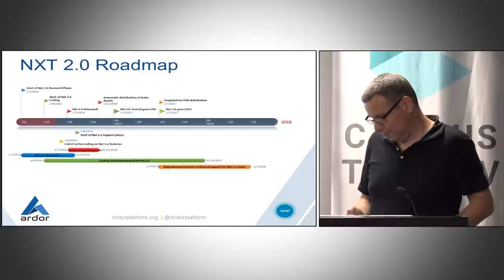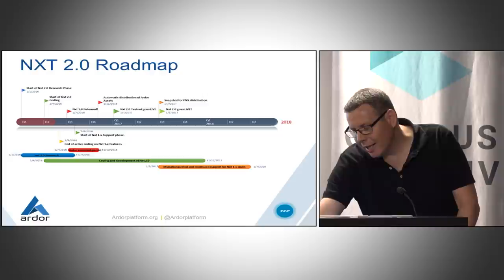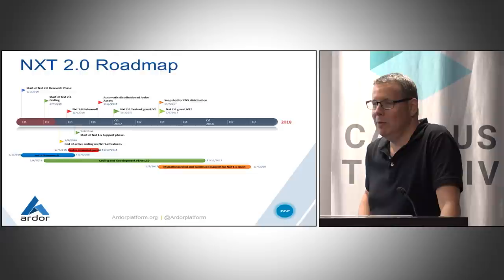The inventor of NXT is known as BCnext. He appeared on the BitcoinTalk forum, launched the genesis block, and then disappeared shortly after. Nobody really knows who he is.